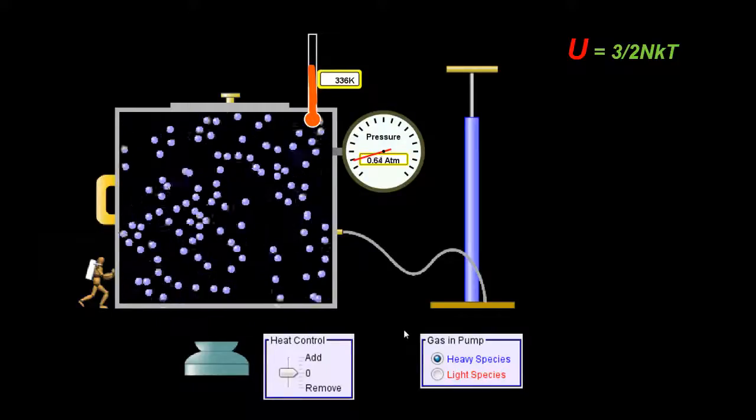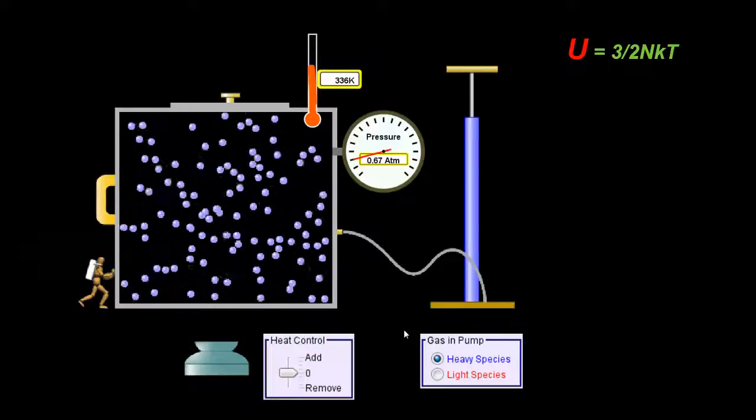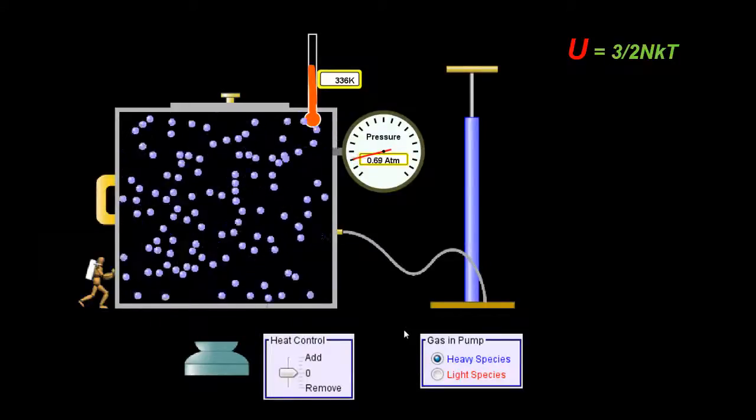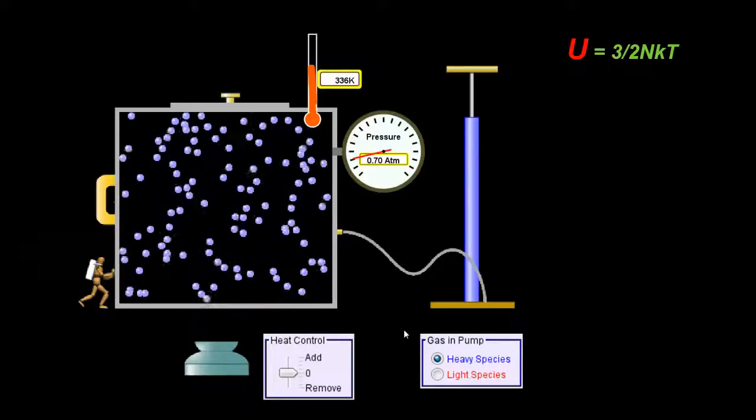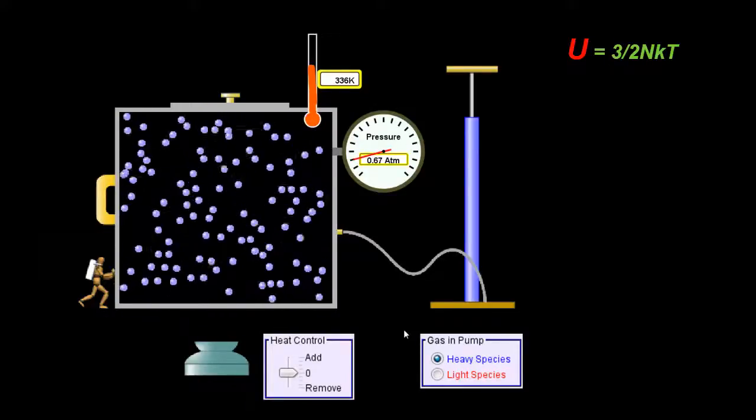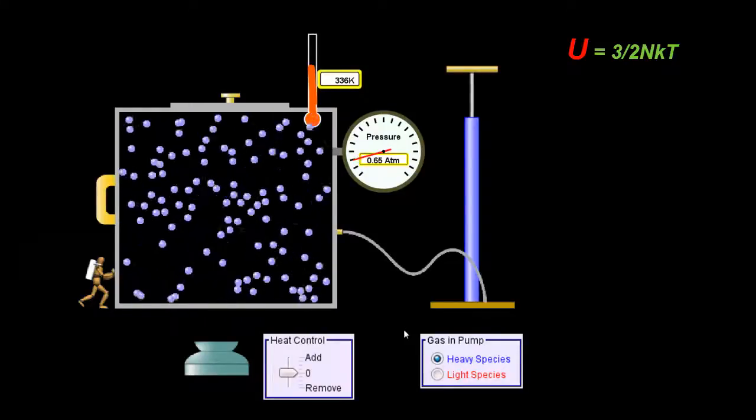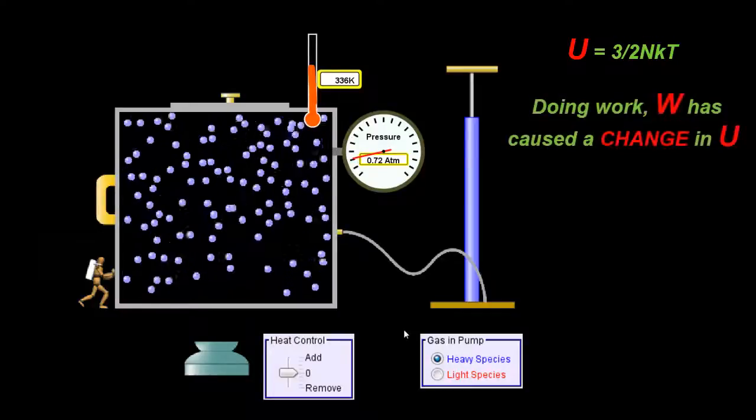So doing work on the gas, making the volume smaller or squeezing the gas has caused more frequent collisions and the internal energy of that gas as indicated by the temperature has gone up. So those molecules are moving a little bit more rapidly as they're flying around in the chamber.